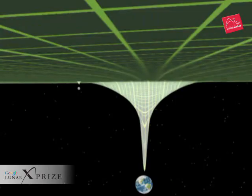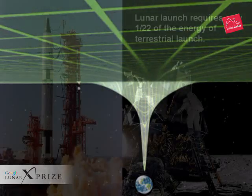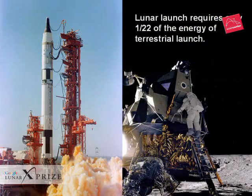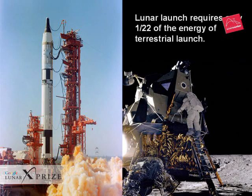Another way to appreciate the relative ease of launching from the moon is to look at the huge Titan rocket used to launch two astronauts in the Gemini spacecraft. By contrast, it only took the top half of the lunar module to launch two moon astronauts and hundreds of pounds of rock into lunar orbit.